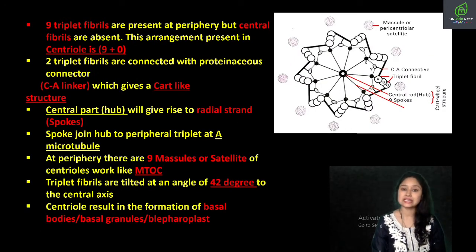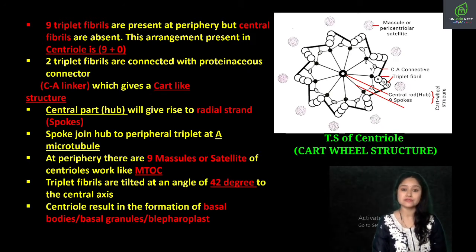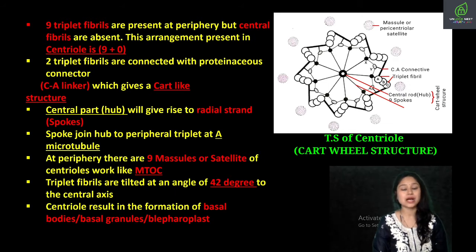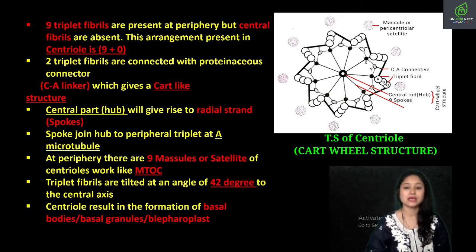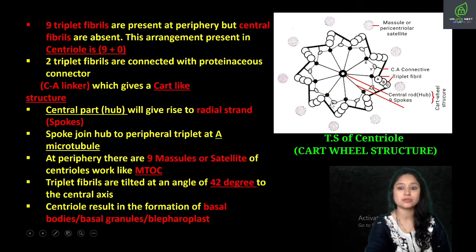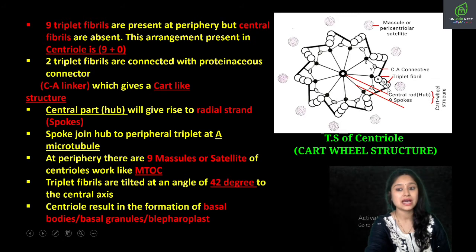Now let's understand the transverse section of centriole. Jab centriole ki transverse section ko dekha gaya, its structure appeared like a cartwheel. Isi liye kaha gaya cartwheel structure of centriole. Here you could see that triplet fibrils are present at the periphery. Triplet fibrils ka matlab hai ki teen microtubules apas mein join hain — this is first microtubule A, B, and C. These triplet fibrils are going to be nine in number.